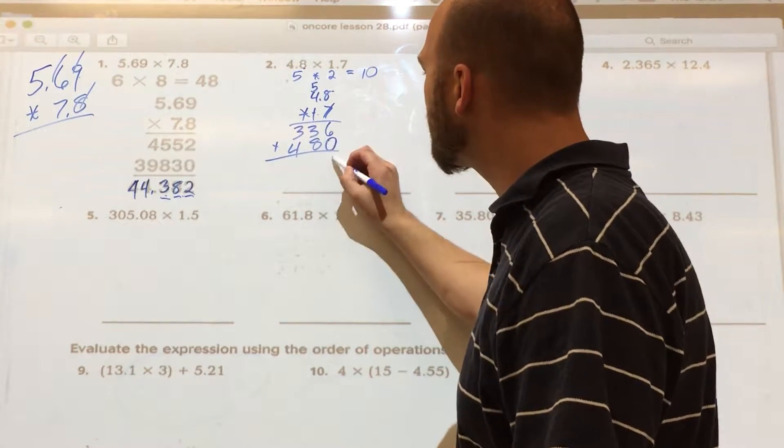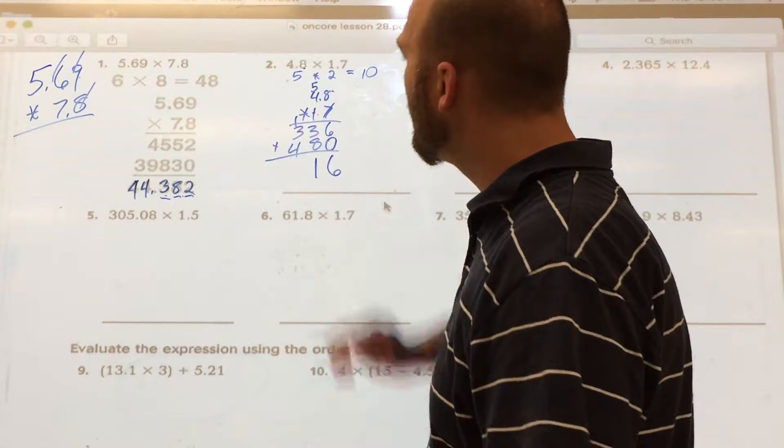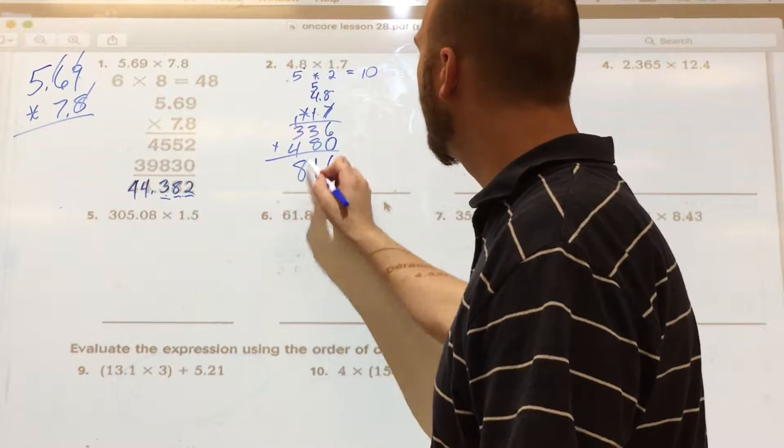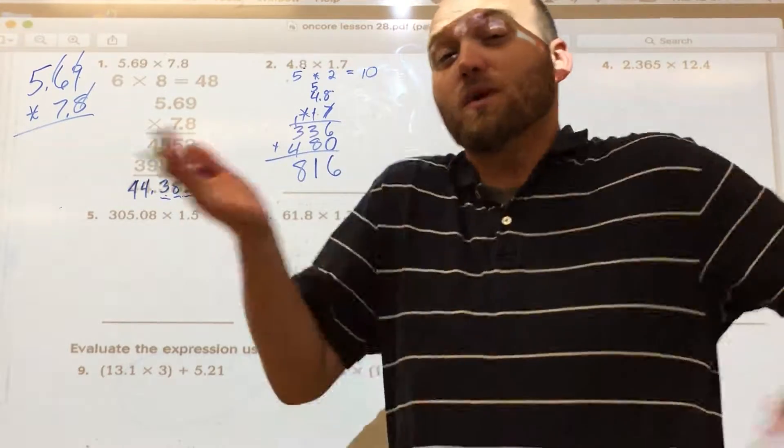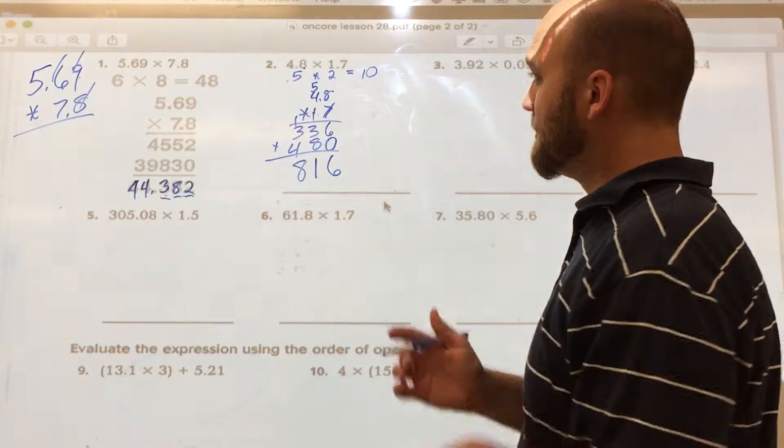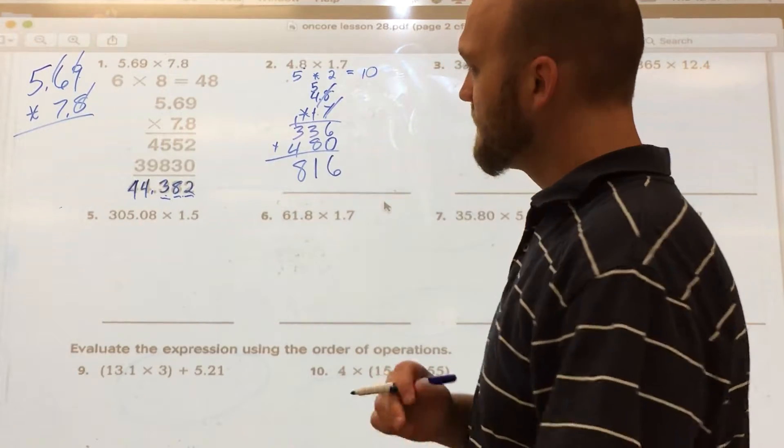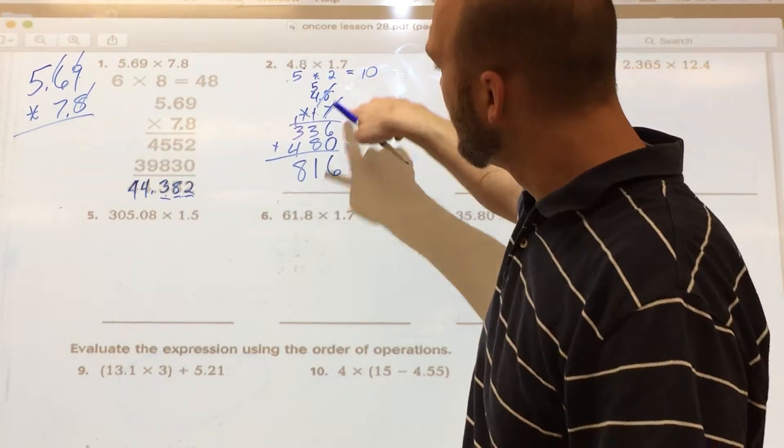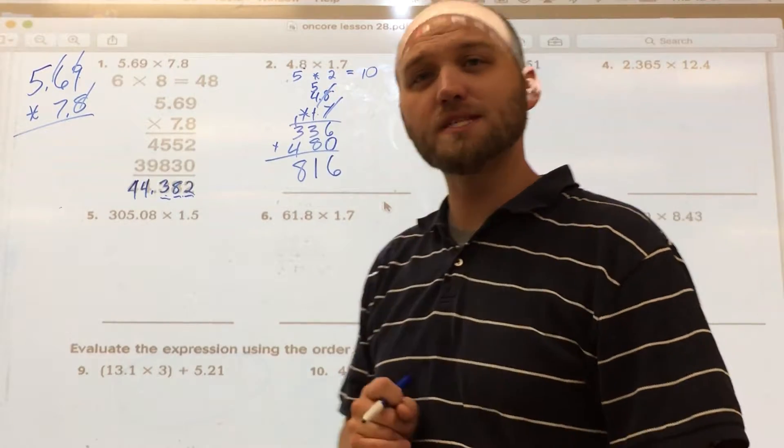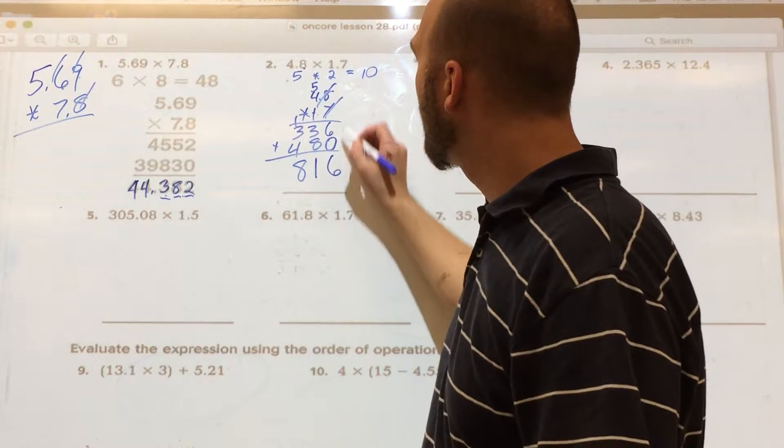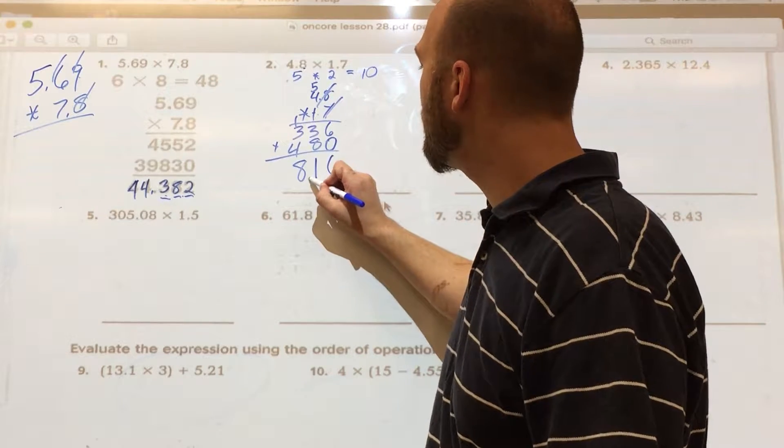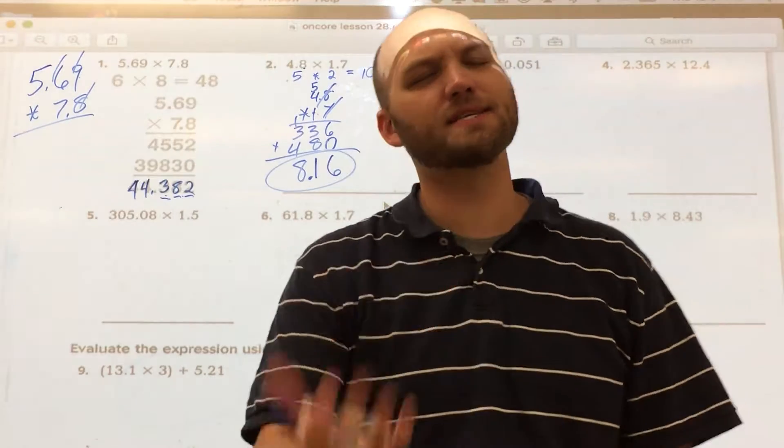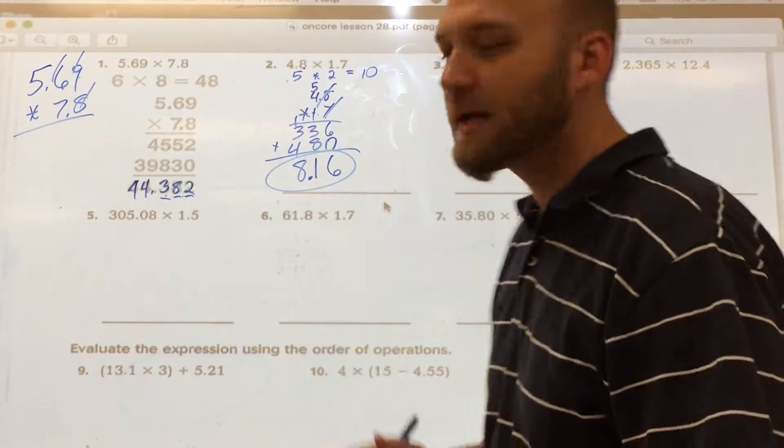So I add them up. 6 plus 0 is 6. 8 plus 3 is 11, and I carry the 1 over. 4 plus 3 is 7, plus 1 is 8. And I have 816. So where does my decimal go? Simple. I have 2 digits to the right of a decimal in my problem. 1 in 4.8, the 8 is to the right of the decimal. The 7 is to the right of the decimal in 1.7. Therefore, I'm going to have 1, 2, 1, 2 in my answer. 8.16. And is 8.16 close to 10? Yep, it's somewhere in the ballpark.